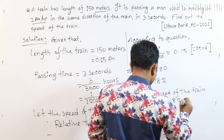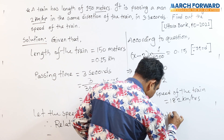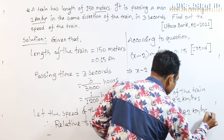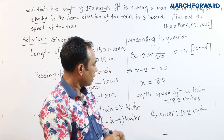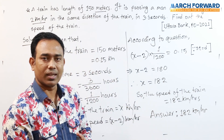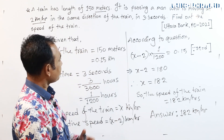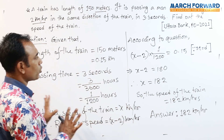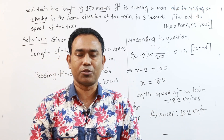So the speed of the train is 182 km per hour. This is the same as 182 km per hour. Assalamualaikum.